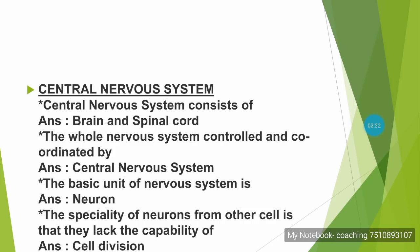Next, the Central Nervous System consists of the brain and spinal cord. The whole nervous system is controlled and coordinated by the Central Nervous System.